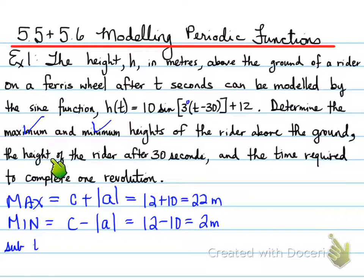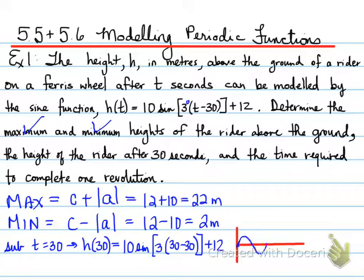Next piece is the height of the rider after 30 seconds, so we sub t equals 30 into the equation. h(30) = 10sin[3(30-30)] + 12. Now very important when we plug this in, 30 minus 30 is 0, 0 times 3 is 0, sine of 0 is 0, times 10 is 0, plus 12 is h(30) = 12. So at 30 seconds, the rider reaches a height of 12 meters.